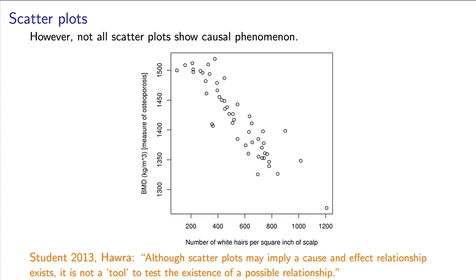What we are observing here is simply a correlation between two variables. There is a third variable which is not shown. That is the person's age. As people get older, the number of white hairs increase. As people get older, their bone mineral density decreases.